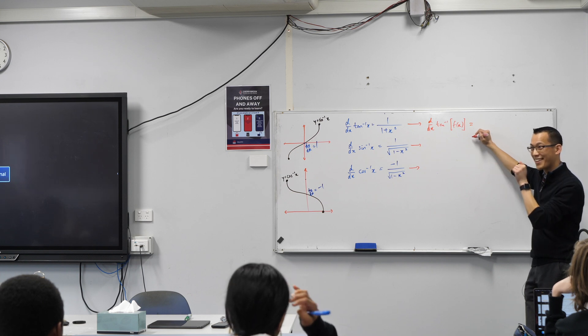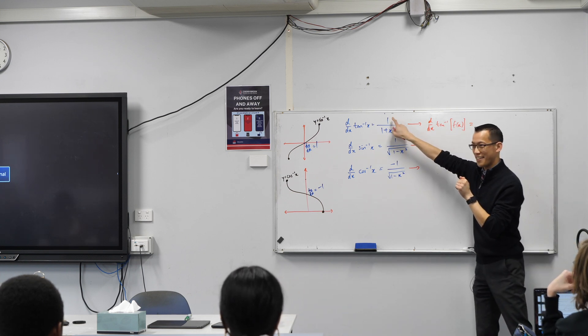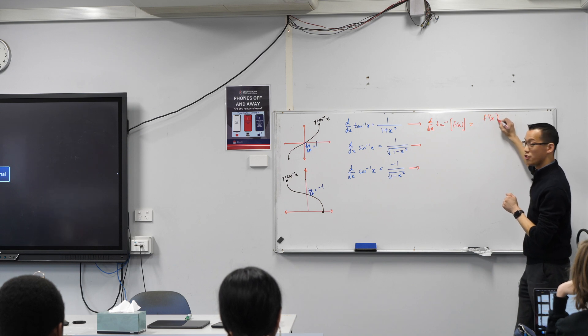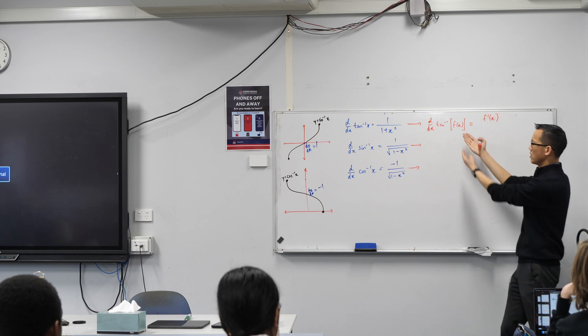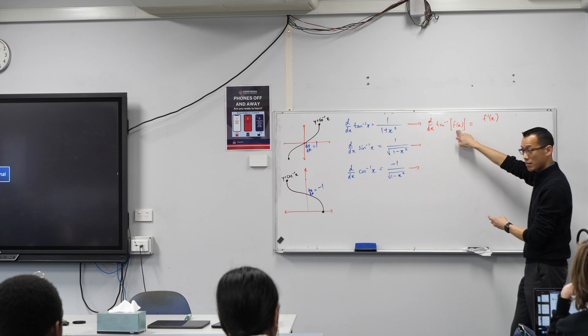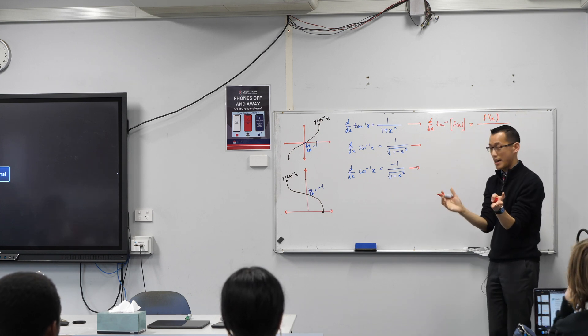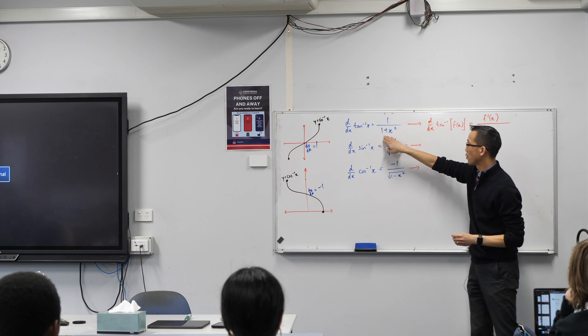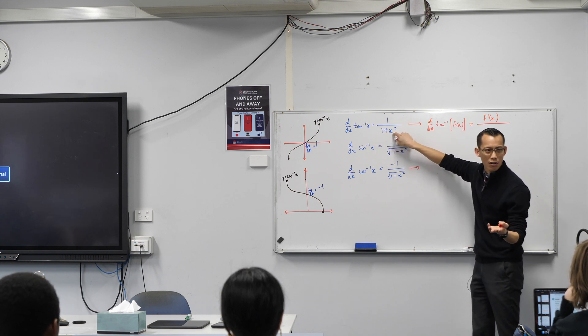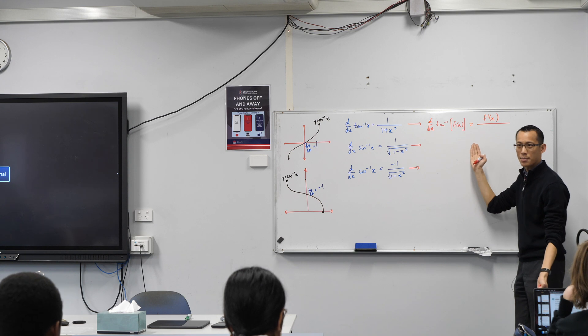Yeah, go ahead. The 1 changes to f dash x. Okay, fantastic. So instead of 1 on the numerator, in normal chain rule, I differentiate the inside, and that gives me this, and then I differentiate the outside, so it'll be 1 on 1 plus, but it won't just be x anymore. It'll be whatever that function happened to be, okay?